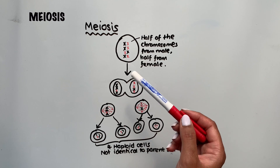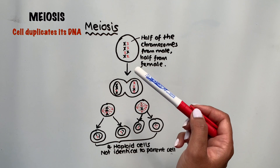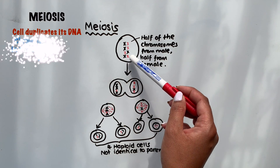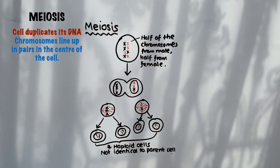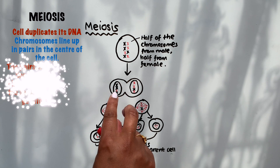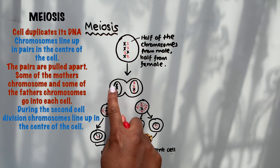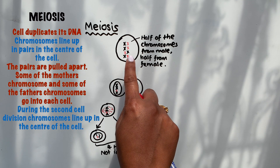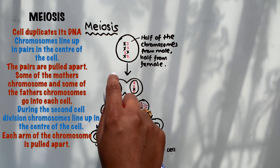These gametes are produced by meiosis. In the first cell division of meiosis, the chromosomes line up in pairs — which is different to mitosis. Half of the chromosomes come from the male and half from the female. The pairs are pulled apart by the spindle fibres and go to opposite ends of the cell, producing two cells. The information in these two cells is not genetically identical, because during this first phase, where chromosomes are lining up, genetic information can be swapped between each pair.